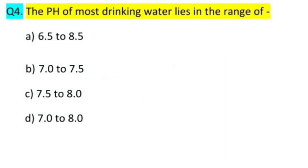Question number four: the pH of most drinking water lies in the range of which range? What is pH value? pH value is potential of hydrogen. It is one of the tests for water, checking the quality of the water. This test actually measures the acidity or alkalinity of the water.